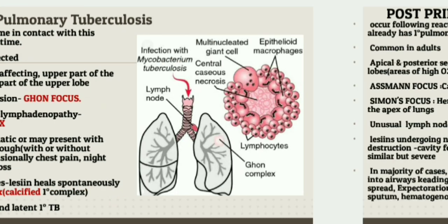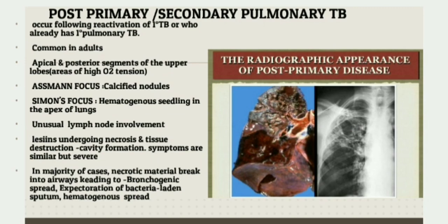Next, let's discuss post-primary or secondary pulmonary TB. Secondary pulmonary TB occurs following the reactivation of latent TB, or in someone who already had primary pulmonary TB but the disease was controlled and they get re-exposed to bacteria frequently and the disease worsens. Adults are commonly affected. The areas of lung with high oxygen tension are affected most — commonly the apical and posterior segments of the upper lobes. Assmann focus, or infraclavicular infiltrate, are calcified nodules usually seen in the upper lobe. Simon's focus is a hematogenous seeding in the apex of the lung. Lymph node involvement is unusual in secondary TB. The lesions undergo necrosis and tissue destruction, leading to cavity formation. Symptoms of secondary TB are similar to primary TB but with greater severity.